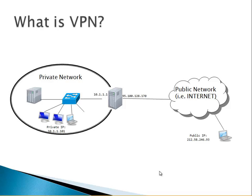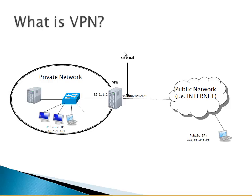With VPN, we need to create a VPN server. This server needs two interfaces: one network interface card connected to the internal network, and one NIC connected to the external network. The external-facing interface has a public IP address, which is what remote clients will communicate with.